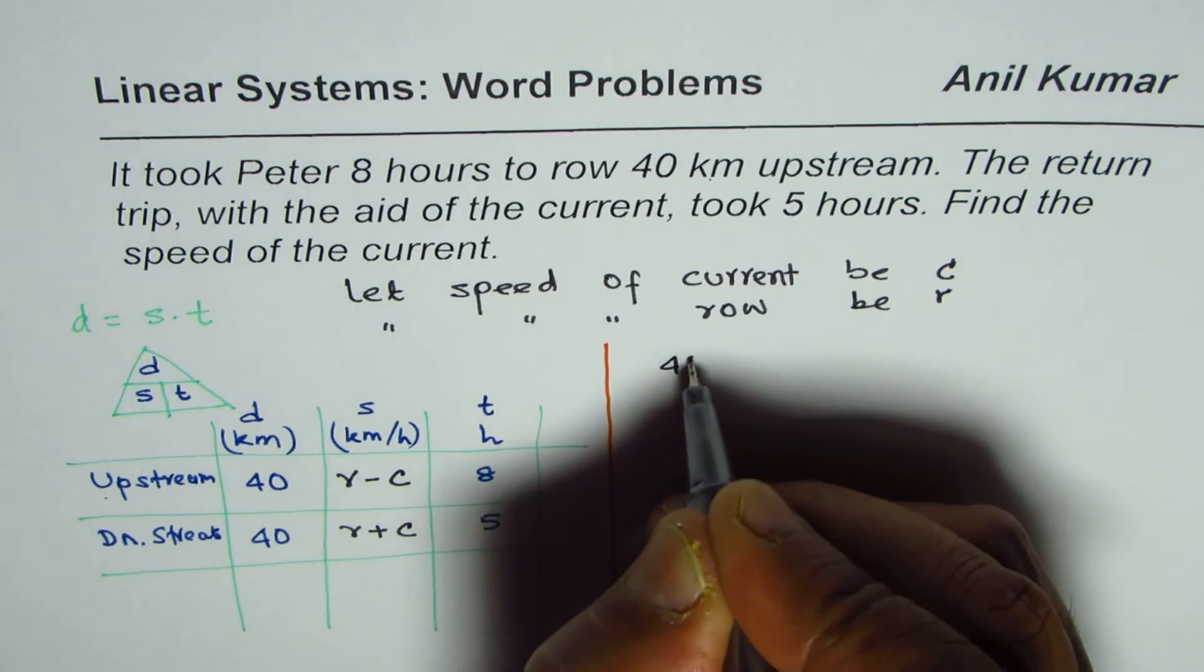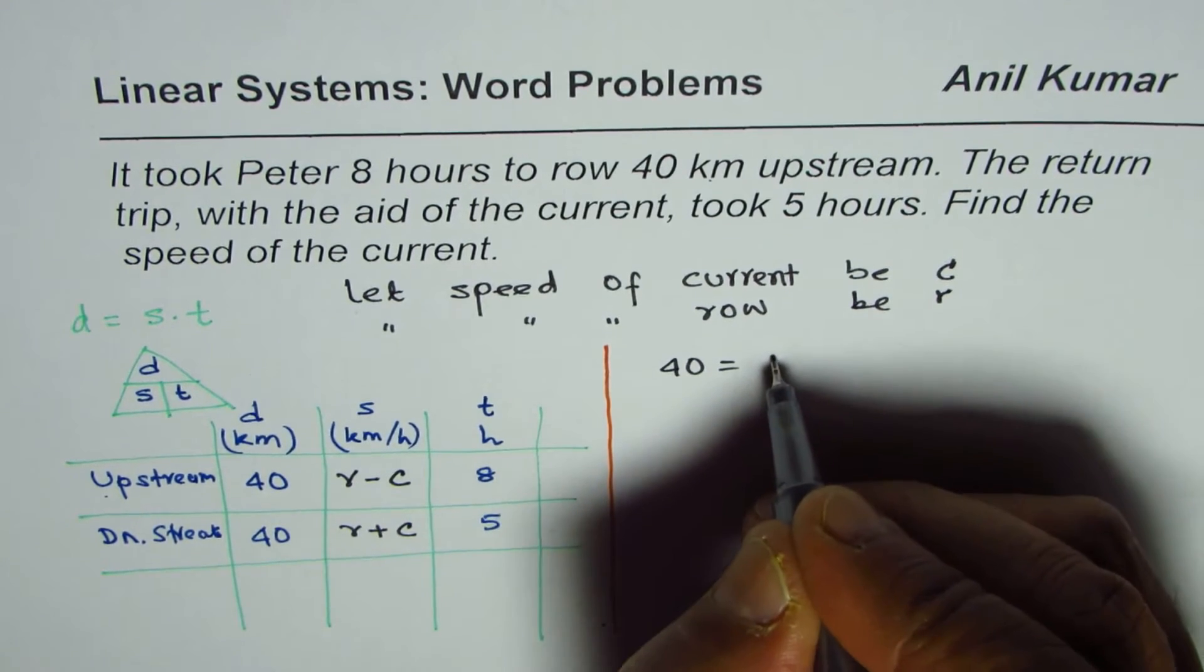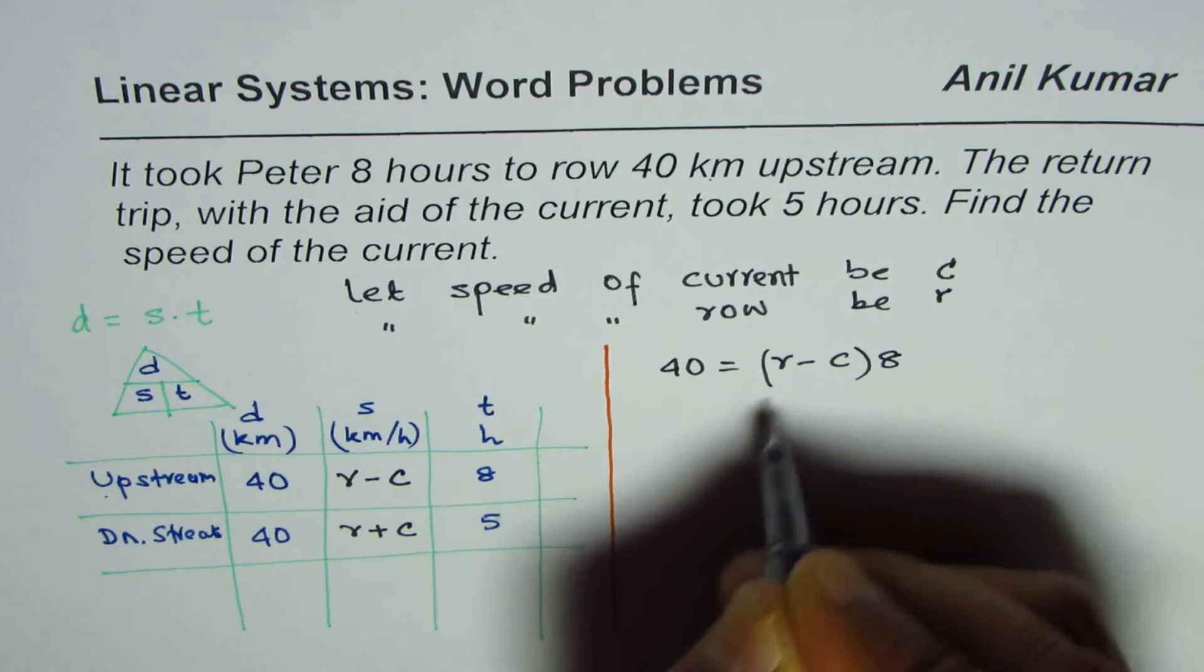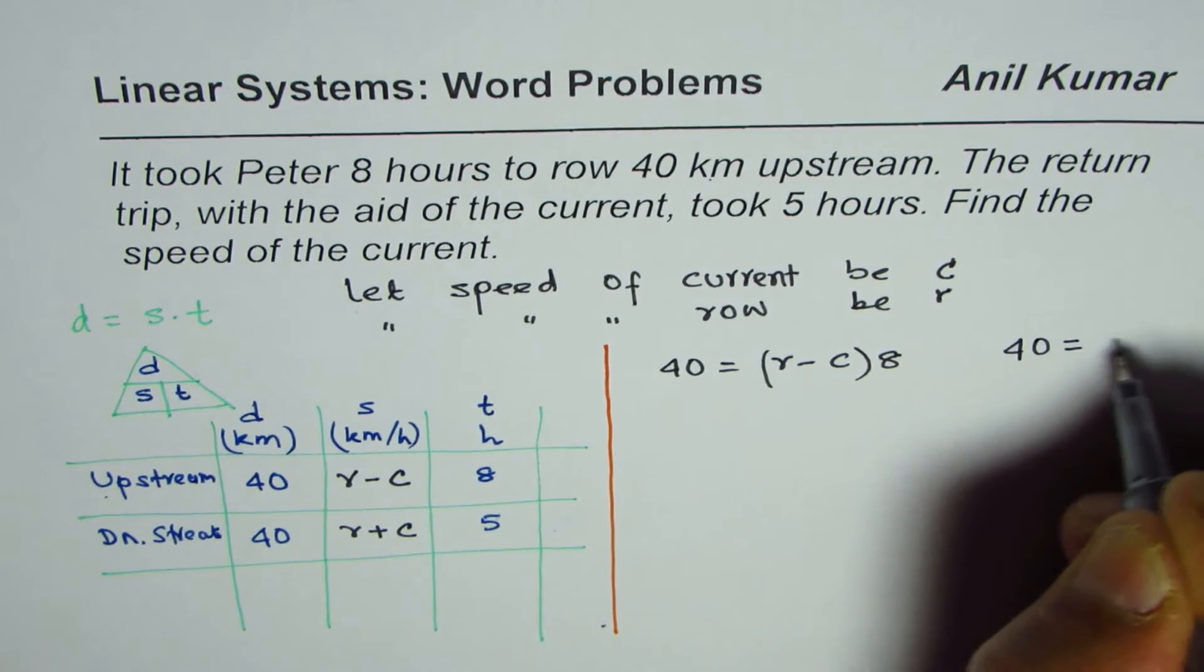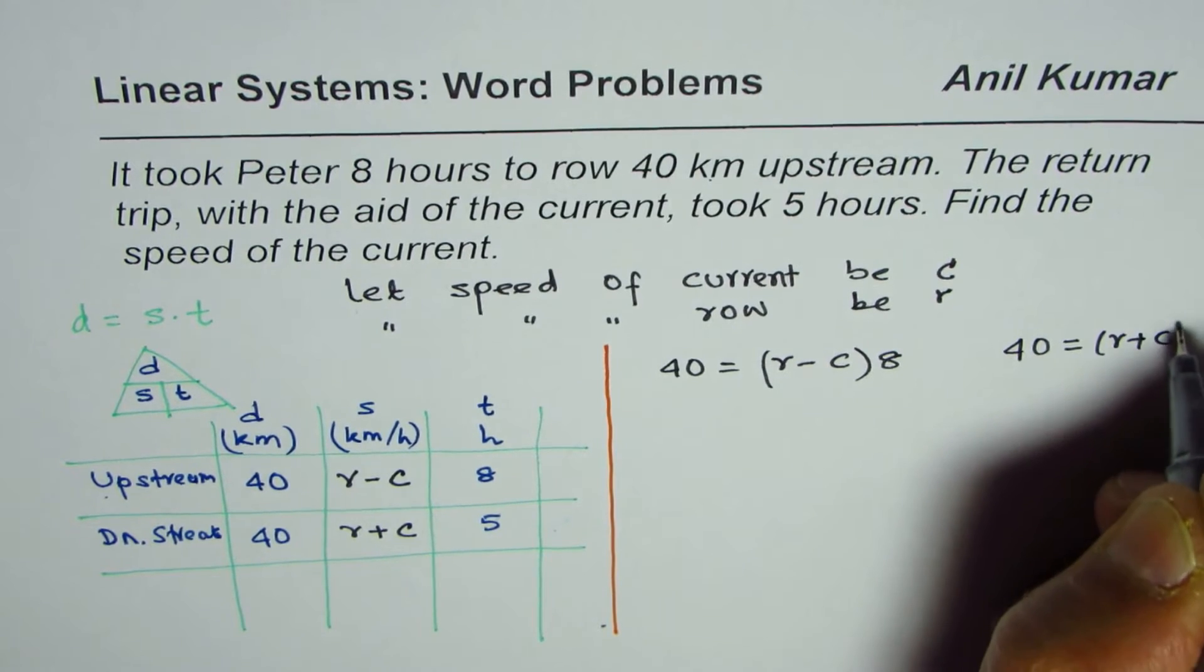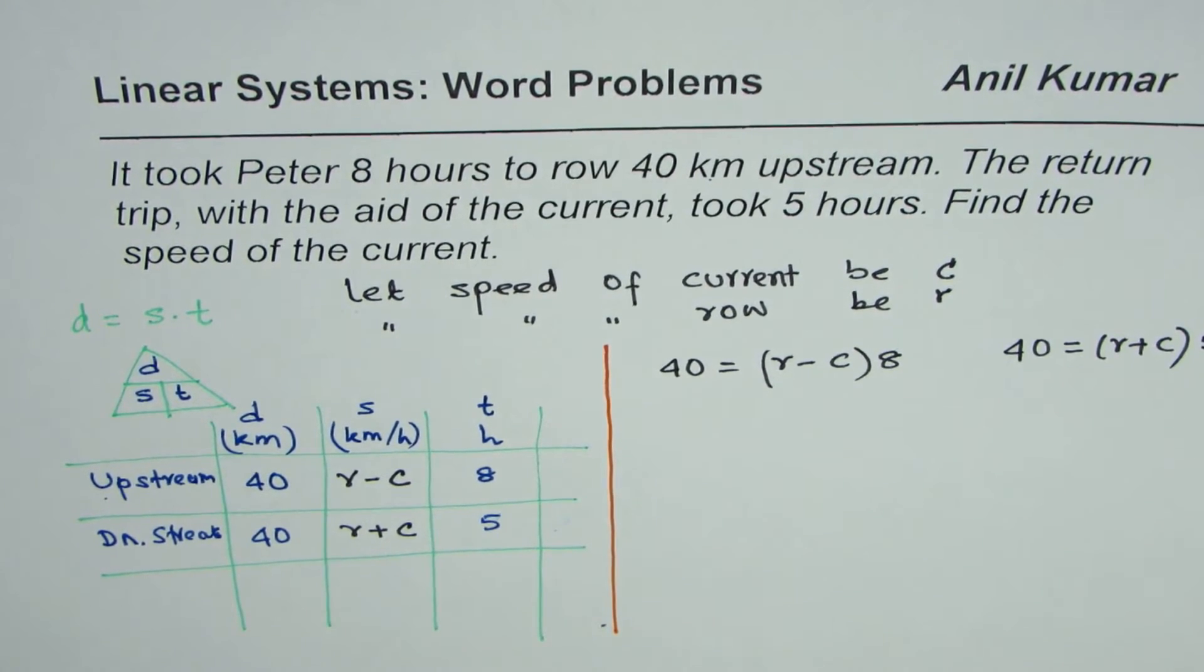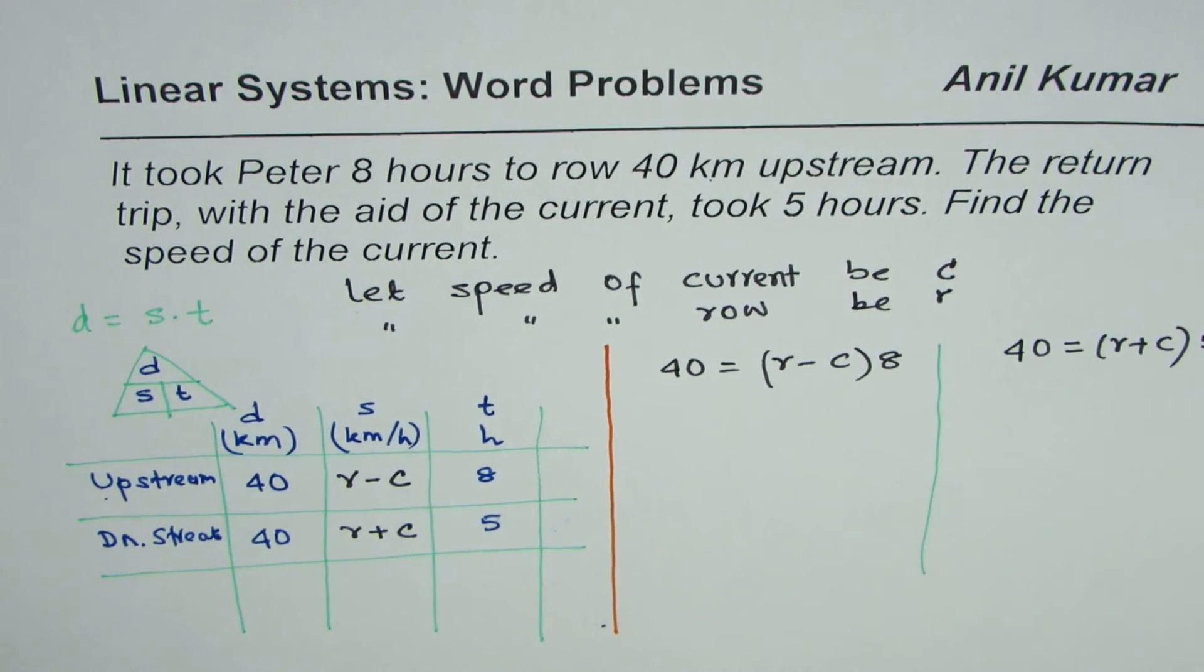The first one here we could write as 40, that is the distance, is equal to speed into time, which is r minus c times 8. This is one equation. The second equation is 40 equals r plus c times 5. So these are the two different equations. We have two equations and two variables.